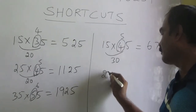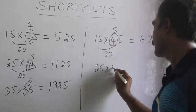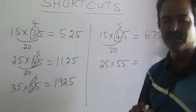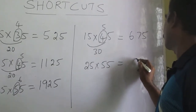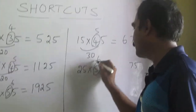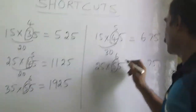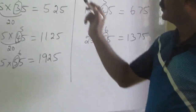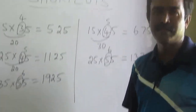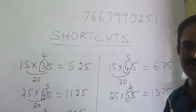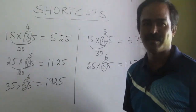Let's do the last example: 25 times 55. The gap between the numbers is 30, so the last two digits will be 75. Just increase one more here: 6 to 12, then 12 plus 1 is 13. So the answer is 1375. Please remember to subscribe to this channel. My cell number is 766-799-0251. Thanks for watching this video. Have a wonderful day.